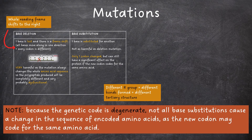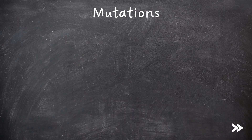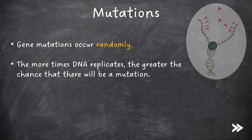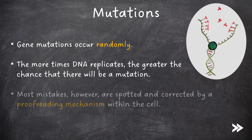Note that because the genetic code is degenerate, not all base substitutions cause a change in the sequence of encoded amino acids, as the new codon may still code for the same amino acid. Gene mutations occur randomly. The more times DNA replicates, the greater the chance that there will be a mutation. Most mistakes, however, are spotted and corrected by a proofreading mechanism within the cell.